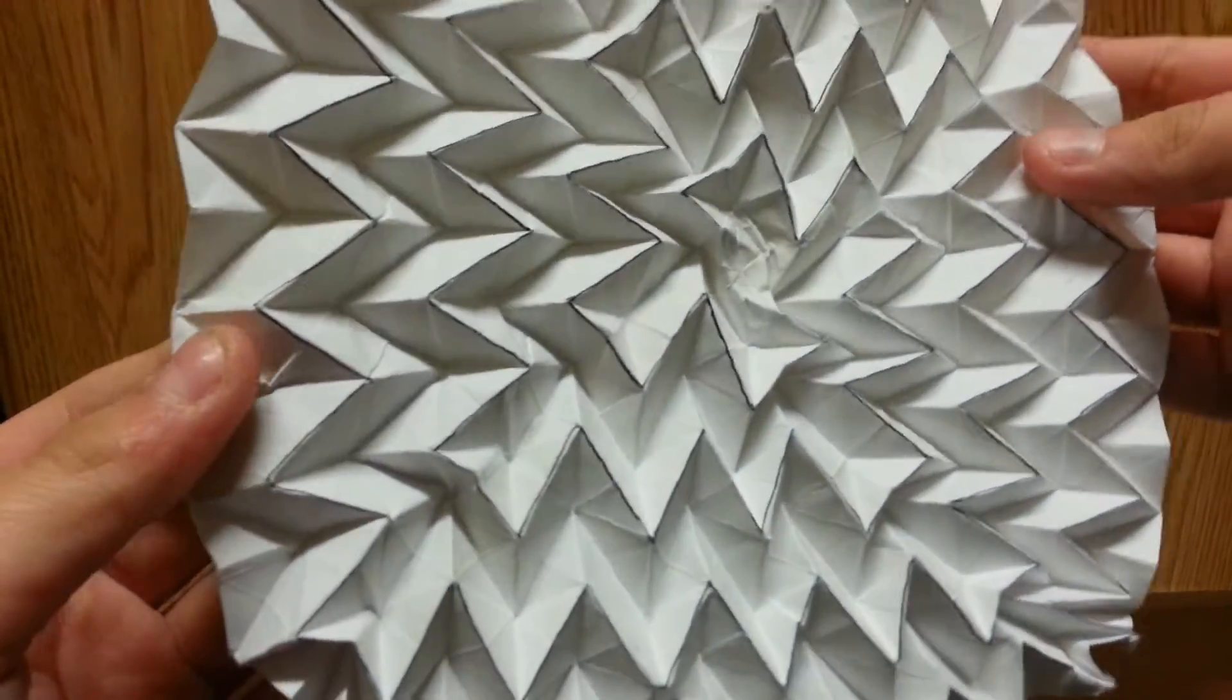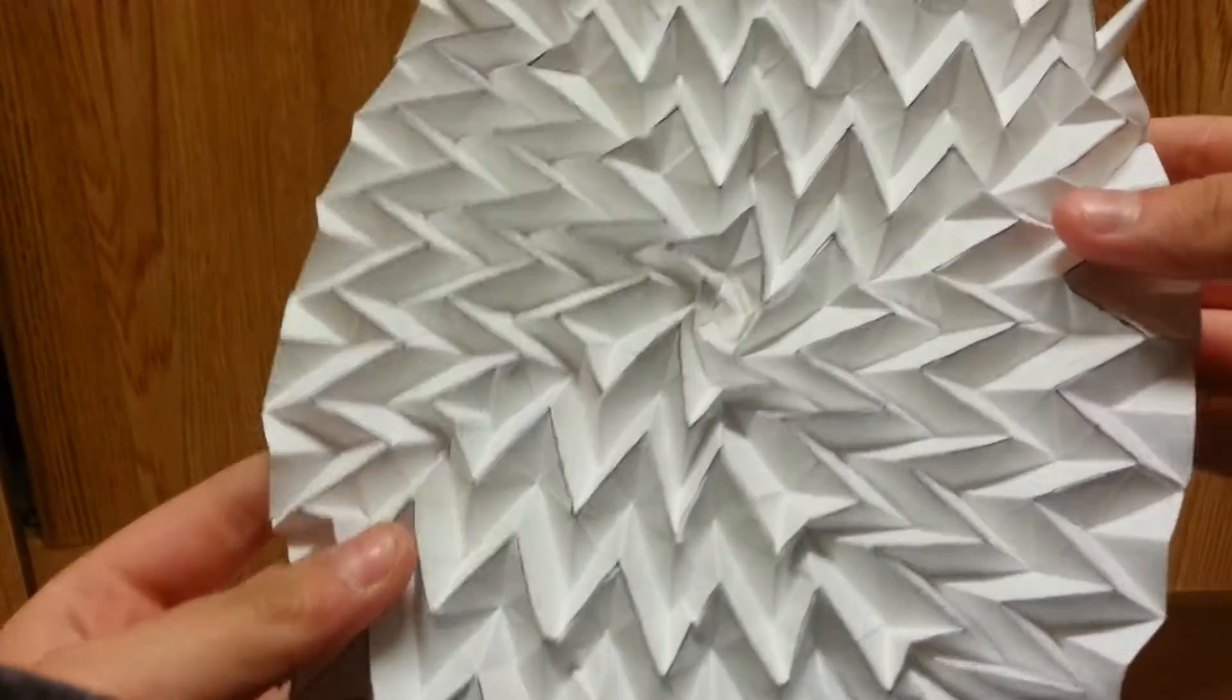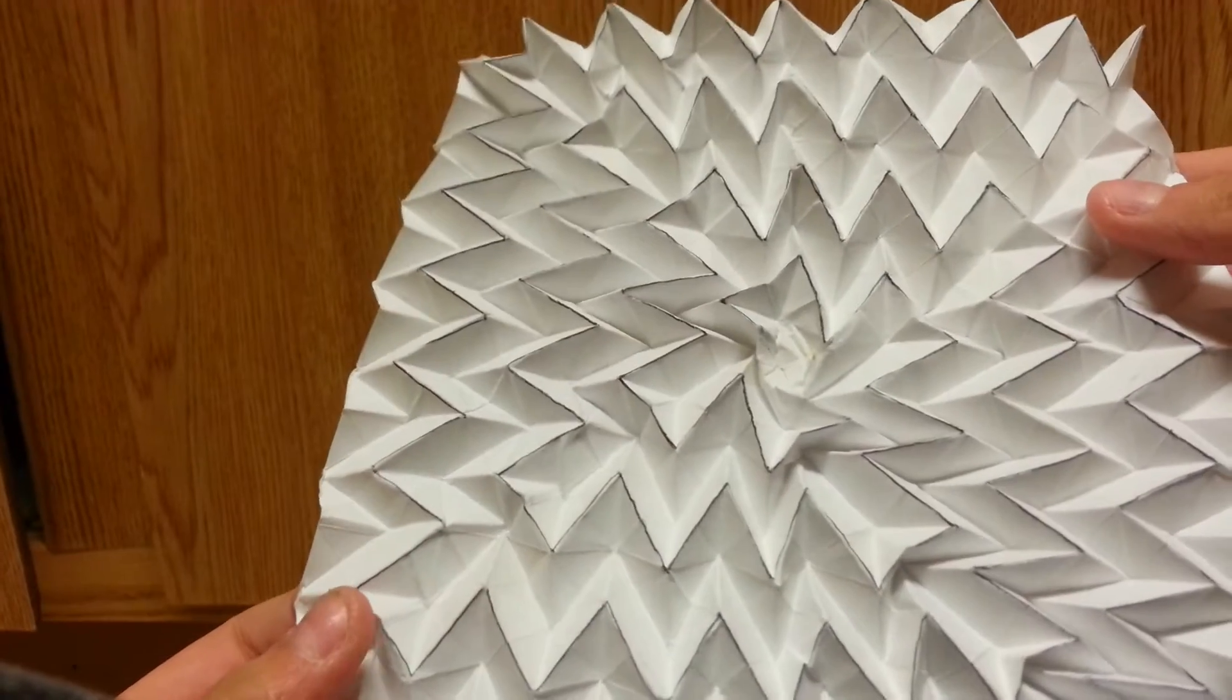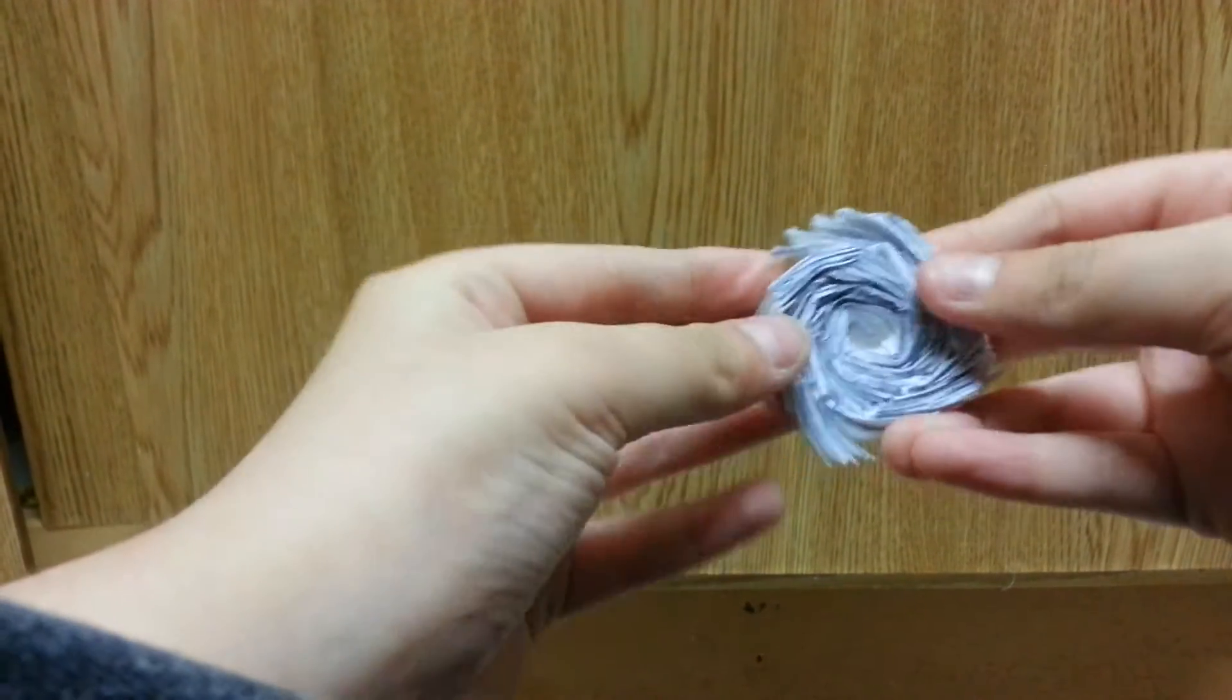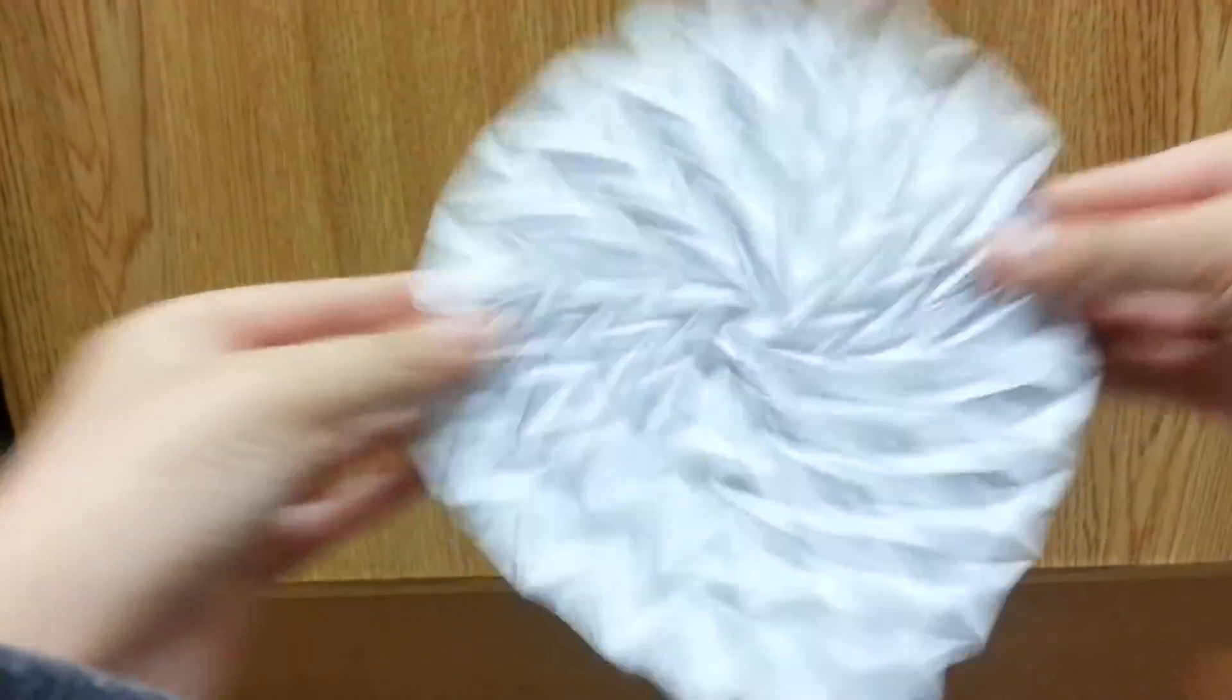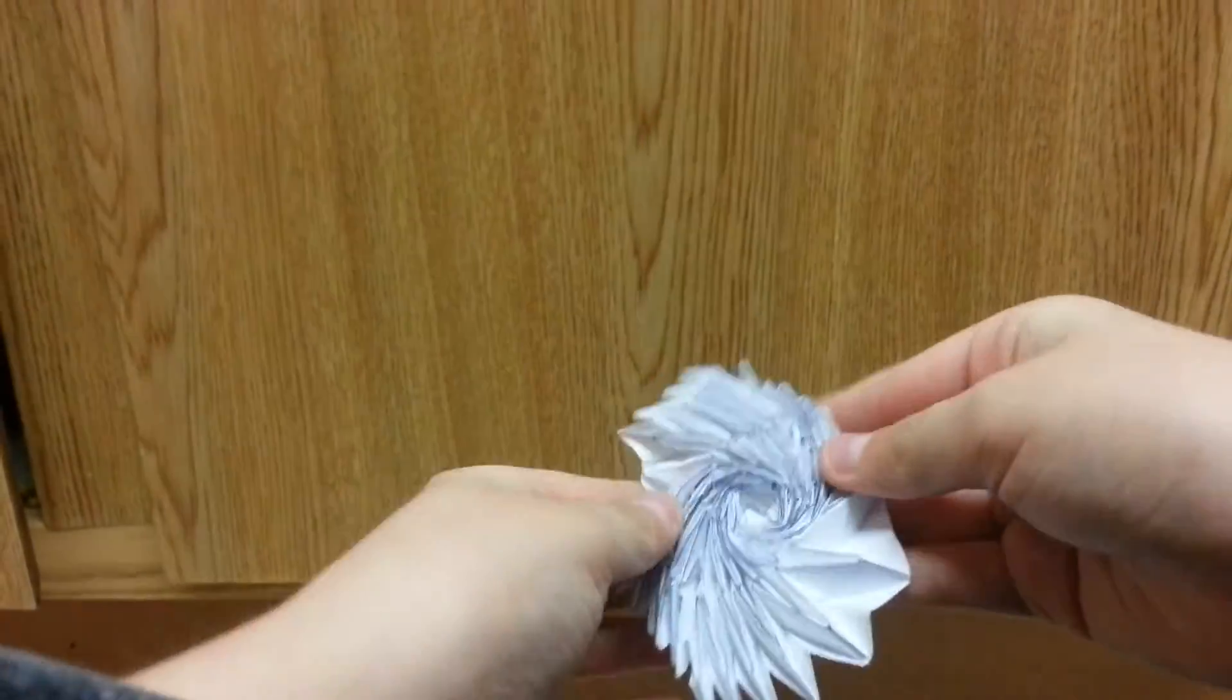The crease pattern. You can see I only drew the mountain folds. I didn't need help with the valley folds because they are easy for me. I just need to know the mountain folds. It just collapses like this. And then, take a bit. Like that.